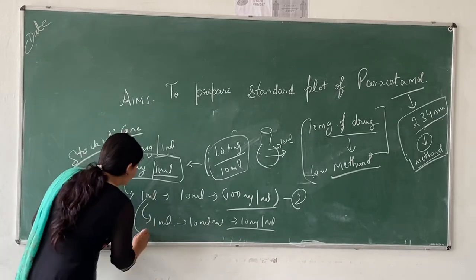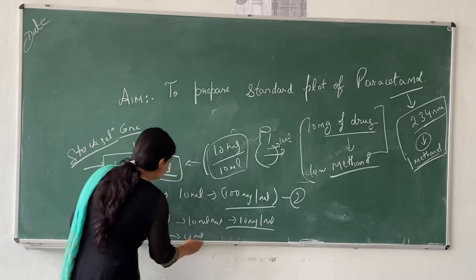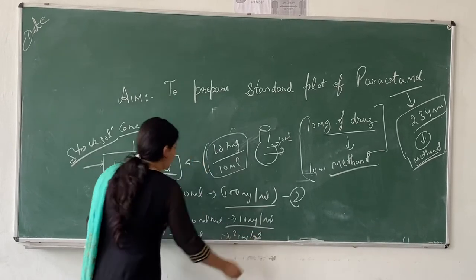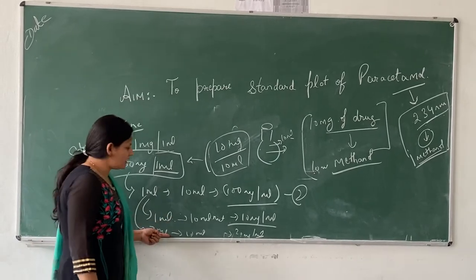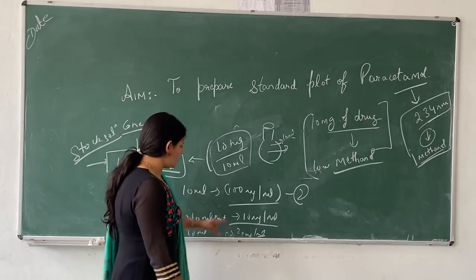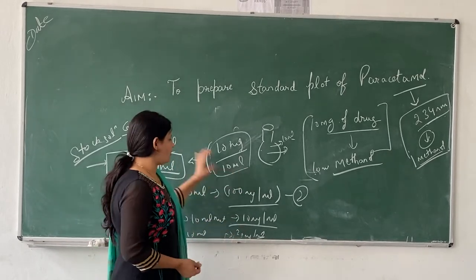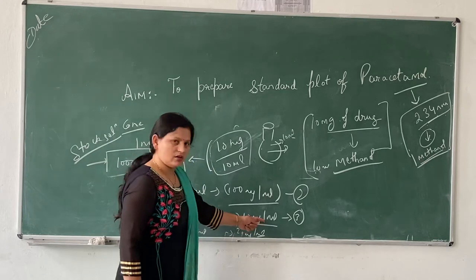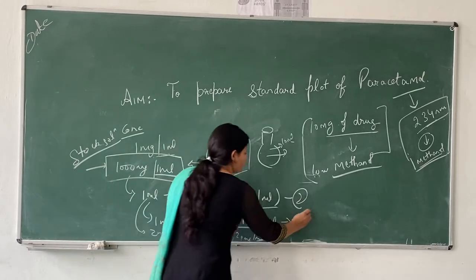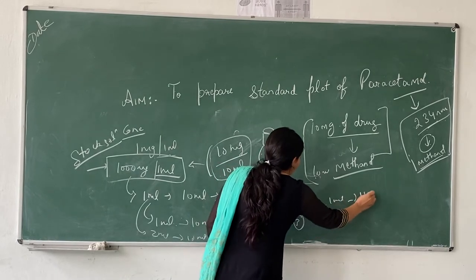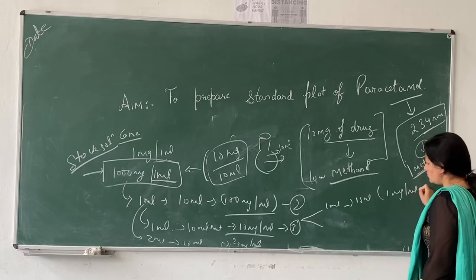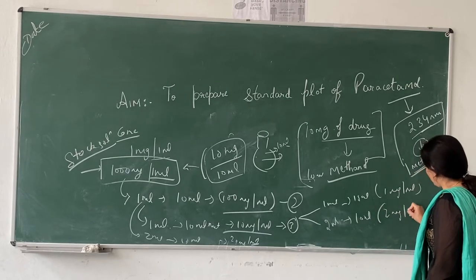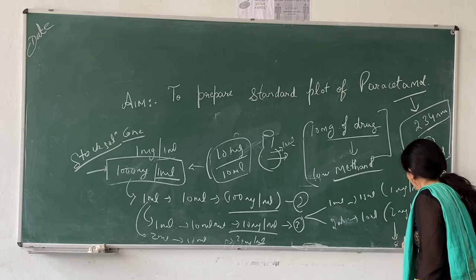If you take 2 mL and dilute it up to 20 mL of methanol, then it will be 20 micrograms of paracetamol. Likewise, take 3 mL and dilute it up to 10 mL, then 30 micrograms of paracetamol. Similarly, we have to prepare different dilutions from these stock solutions. Considering the 10 µg/mL solution as the stock, if we take 1 mL and dilute to 10 mL we get 1 µg/mL; if we take 2 mL and dilute to 10 mL we get 2 µg/mL, and so on up to 8 micrograms of paracetamol.